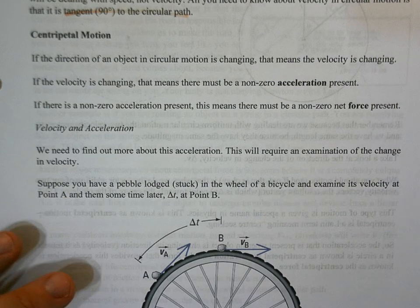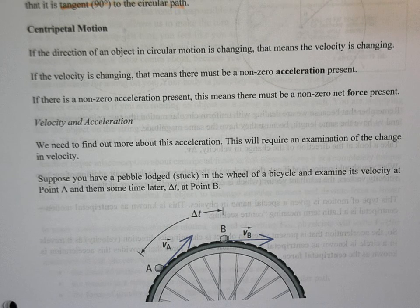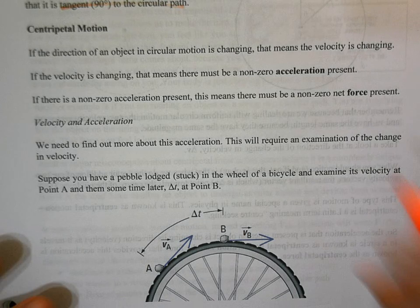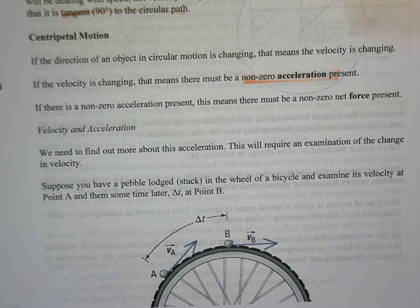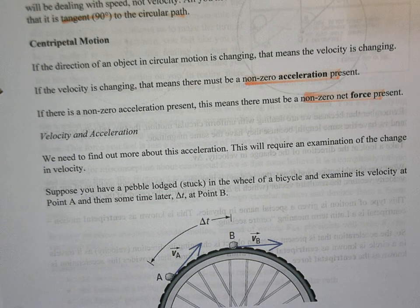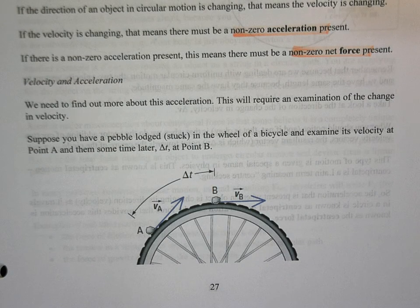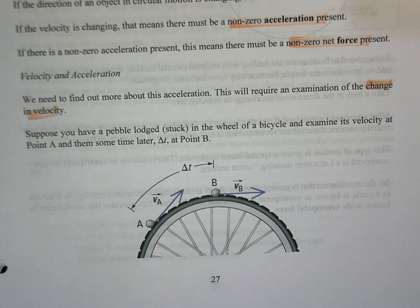Because the velocity direction is continuously changing, an object isn't going to change direction on its own — something has to cause it. A change in velocity means we must have an acceleration present. And if there's an acceleration, Newton's second law tells us — net force equals mass times acceleration — so we also have to have a net force. The acceleration is defined as the change in velocity divided by the change in time.